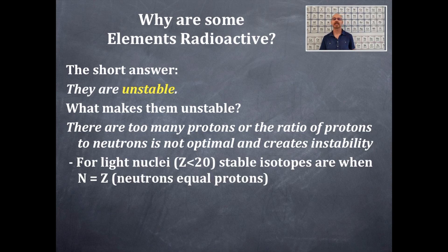For light nuclei, those with atomic number Z less than 20, stable isotopes are when N, the number of neutrons, equals the number of protons, Z.